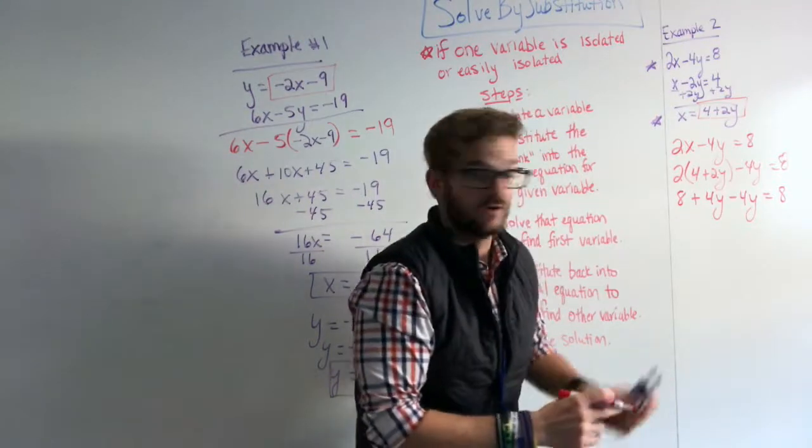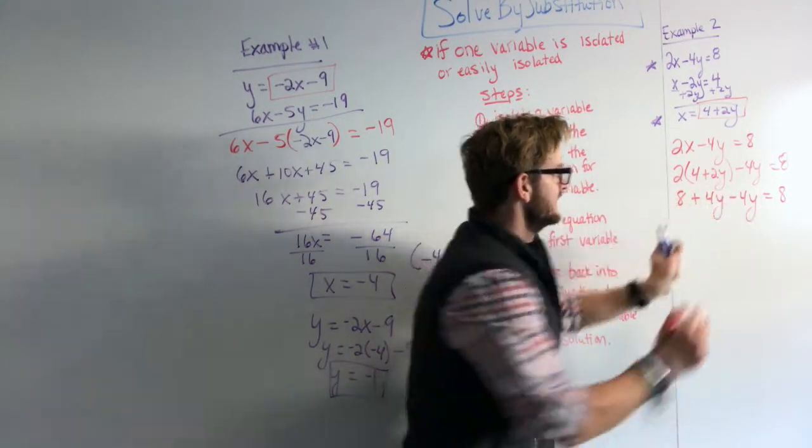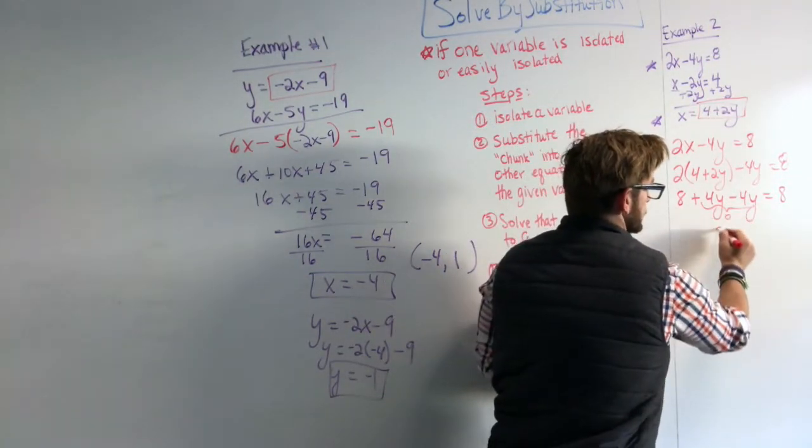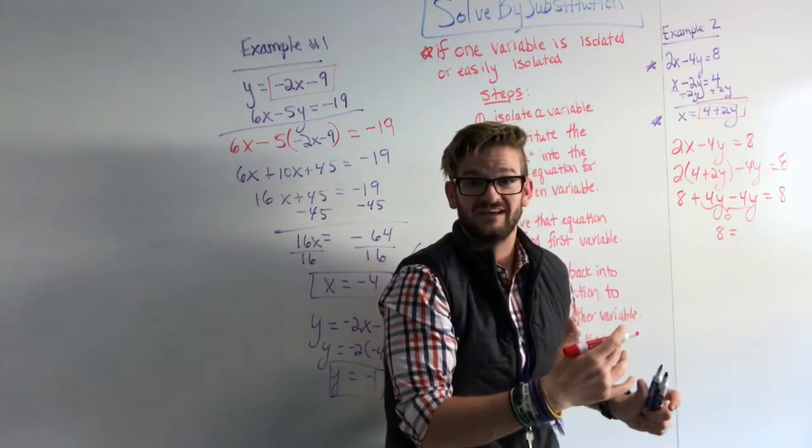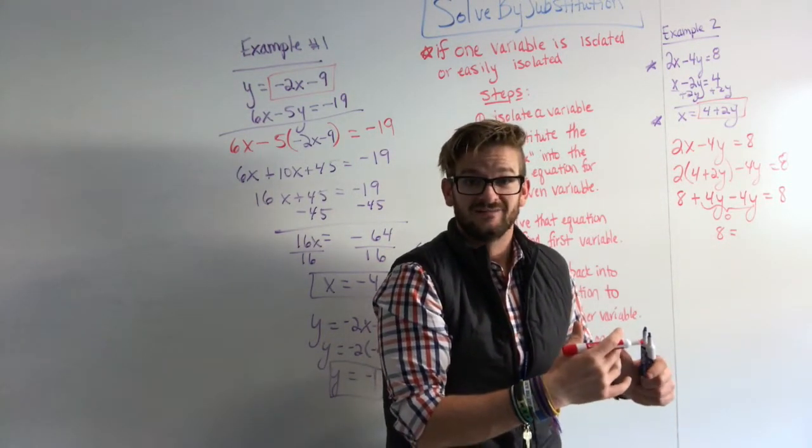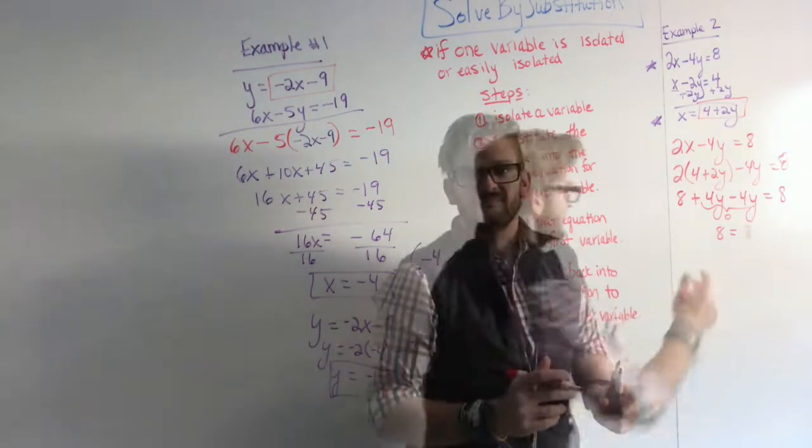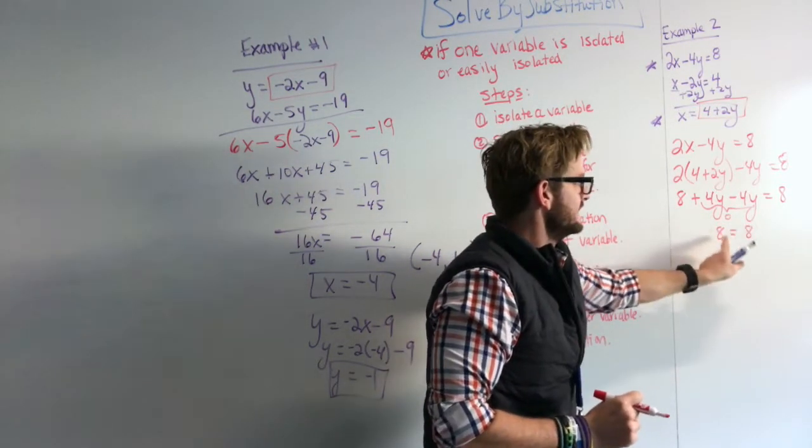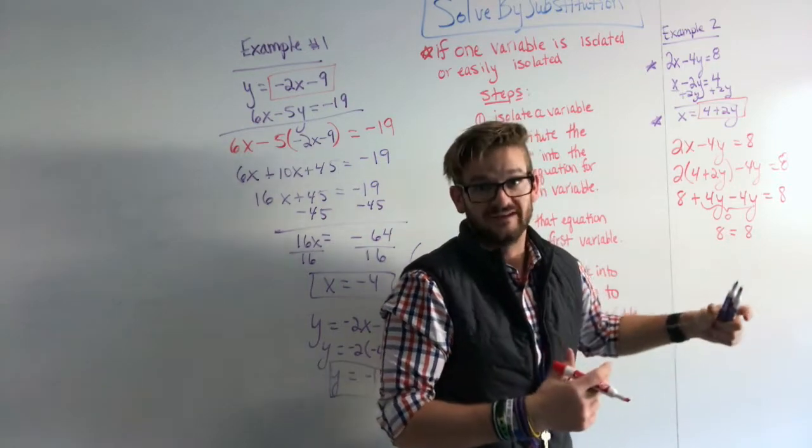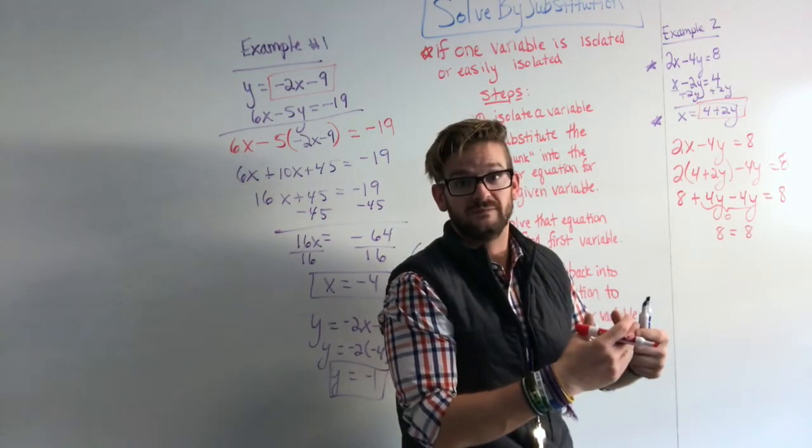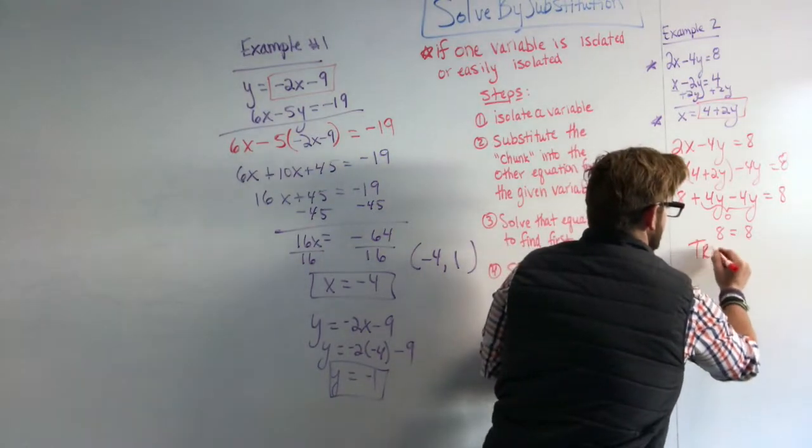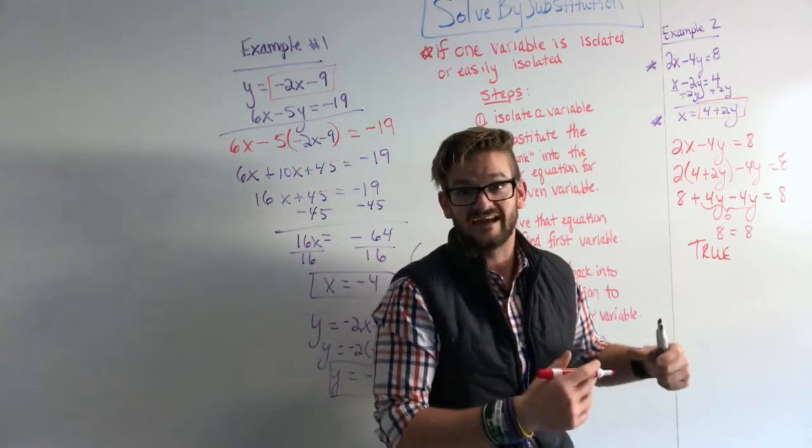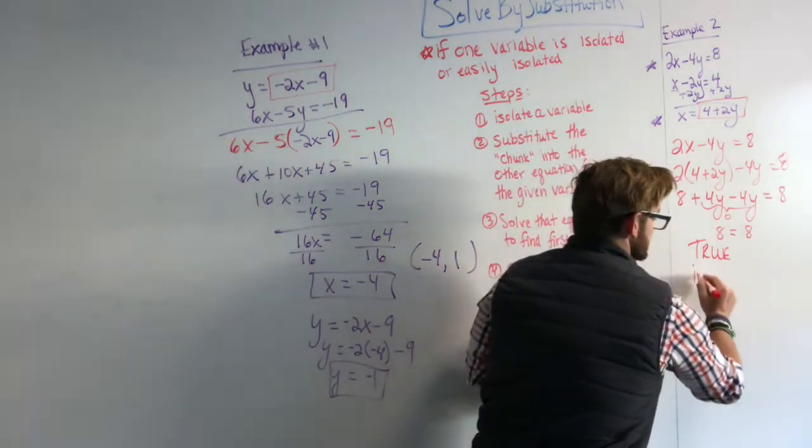So I'm going to solve that equation to find the first variable, still following the same process. Something happens in this equation though, that when we solve it out, we combine this 4y and this negative 4y and we get 0. So this piece becomes 0 and we're left with 8. So our variable is canceled out. So we're not going to get just one solution. We're going to have a different type of solution. We have 8 equals 8. And now we identify this as a special kind of solution. If it is something that is true that will always be true, then like 8 equaling 8, then what that tells us is these two equations were actually the exact same equation. And it is going to be infinitely many solutions.